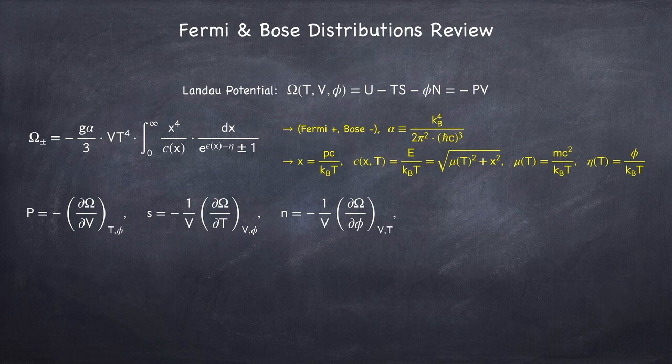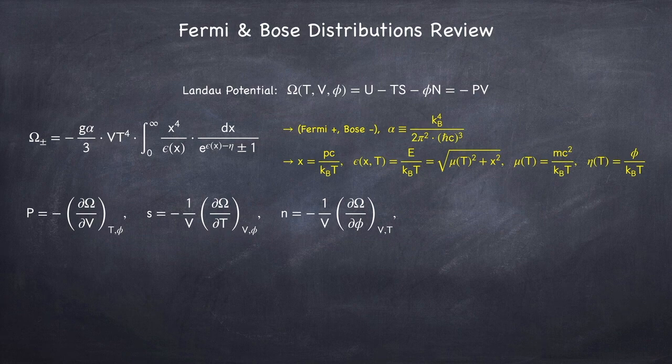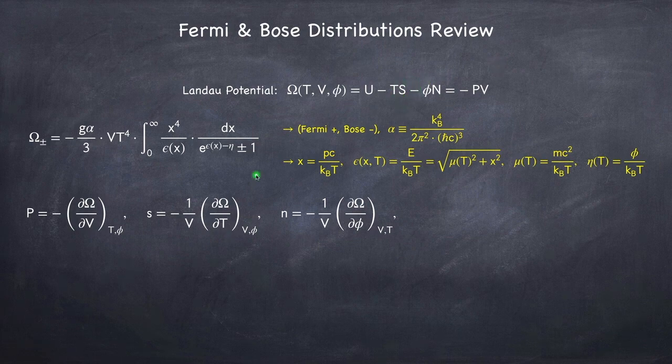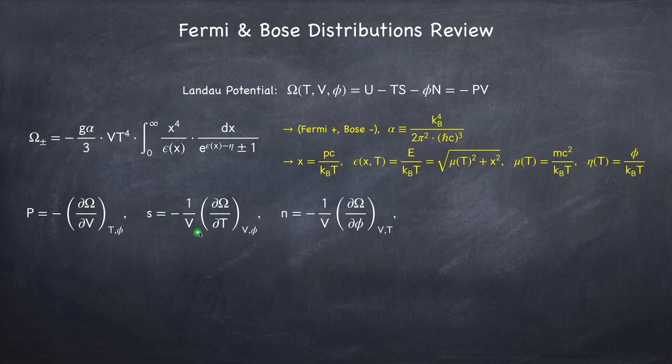The entropy per volume is the negative derivative with respect to temperature divided by the volume. So capital S up here is the total entropy, whereas little s is the total entropy per volume. And similarly,